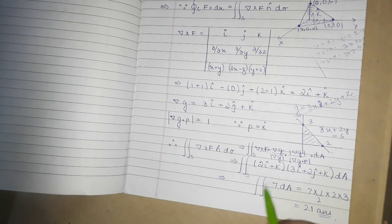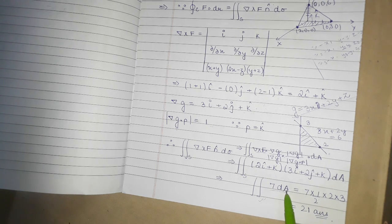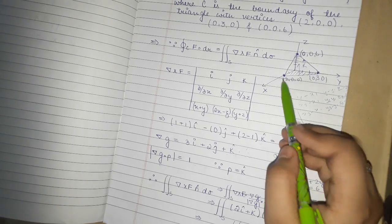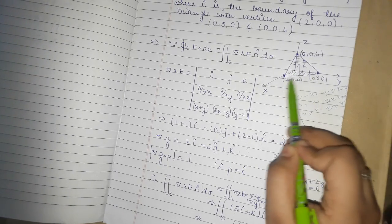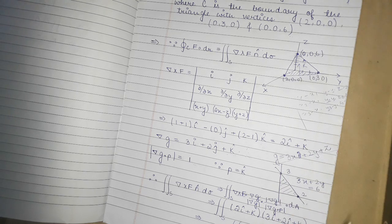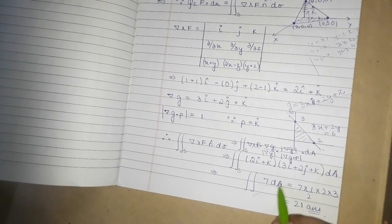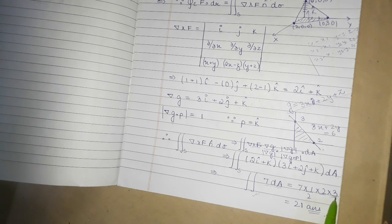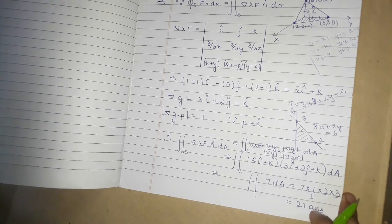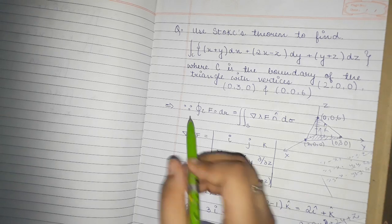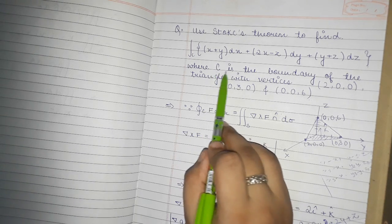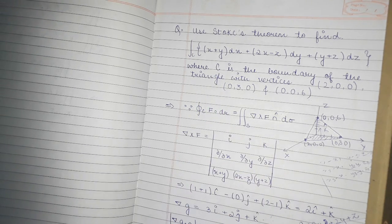Since 7 does not depend on the variables, we can directly apply the area of the triangle formula. One side is 2 and one side is 3, so the area is ½ × 2 × 3 = 3. Therefore the answer is 7 × 3 = 21. That is our required answer — the line integral of curve C, where C is the triangle boundary.